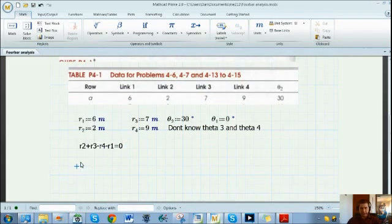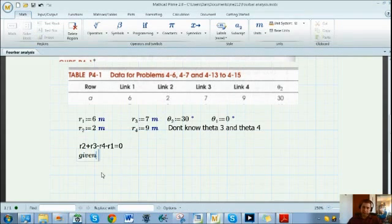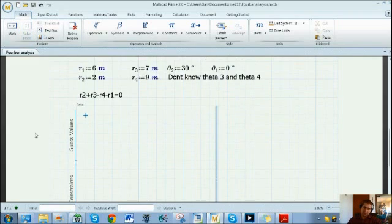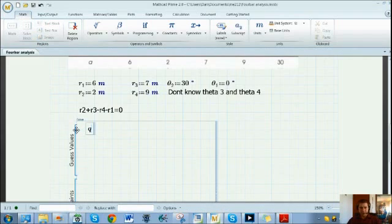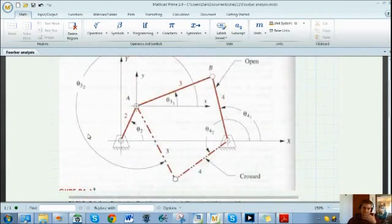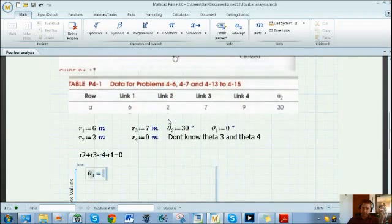We have to set up a system of equations because we have two unknown variables, so we need two equations. In MathCAD 15 you would write 'given' and then your given information and guess values, then write 'find' at the bottom. But in MathCAD Prime you have to use solve blocks. Click solve block first. Now let's type in some guess values. Theta 3, let's say is 30 degrees, we're going to use the top solution.